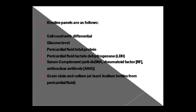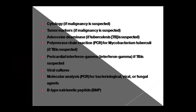You can also do gram staining and culture — grow the pericardial fluid in three culture bottles to check for organisms. Cytological examination can be done if malignancy is suspected, along with tumor markers. Adenosine deaminase (ADA) test can be done if TB is suspected. PCR can also be performed for TB — PCR is very useful in this regard.